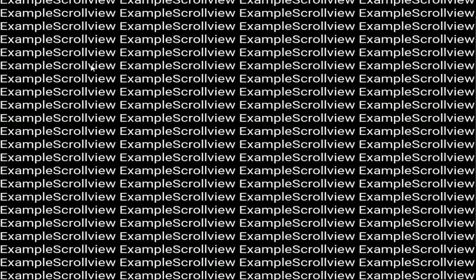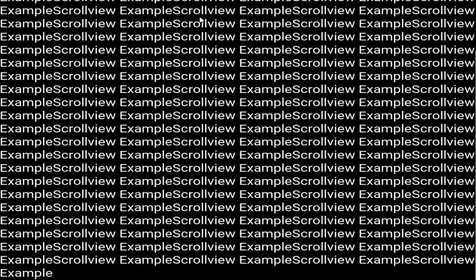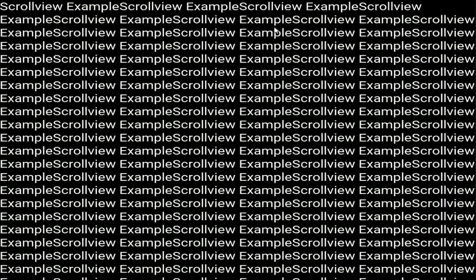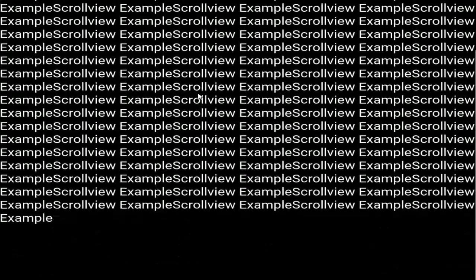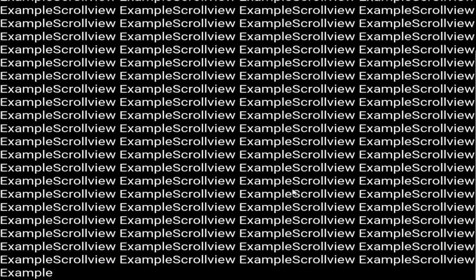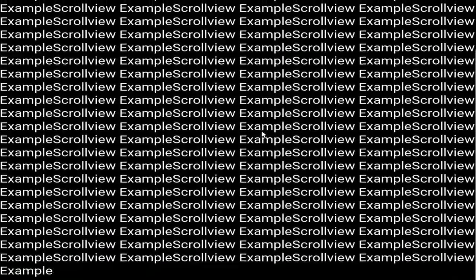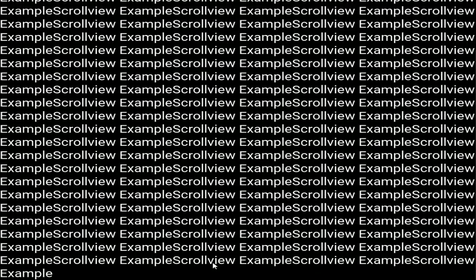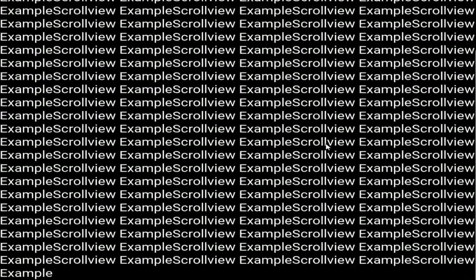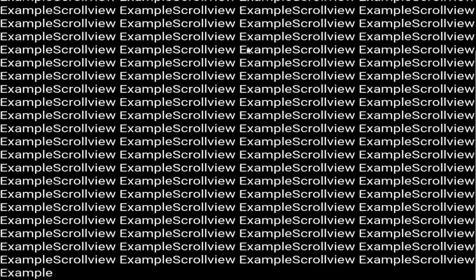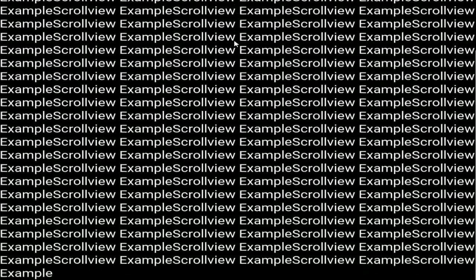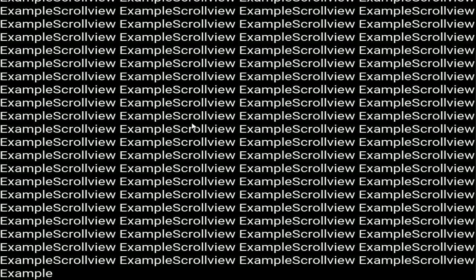As you can see, I defined 'scroll view example' multiplied by 100, so the 100 text instances are visible right now. I can scroll down and scroll up by just moving the mouse. This is how we got the output of the scroll view example. Now let's go back and discuss how this output came.